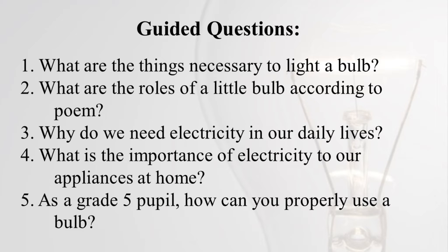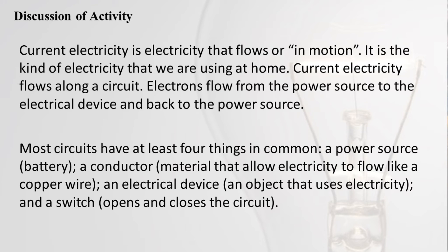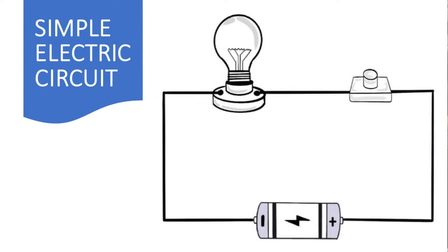What is the importance of electricity to our appliances at home? As a Grade 5 pupil, how can you properly use a bulb? Discussion of activity: Current electricity is electricity that flows or is in motion. It is the kind of electricity that we are using at home. Current electricity flows along a circuit. Electrons flow from the power source to the electrical device and back to the power source. Most circuits have at least four things in common: the power source (battery), a conductor — a material that allows electricity to flow like a copper wire — an electrical device, and a switch that opens and closes the circuit.